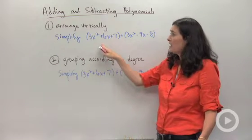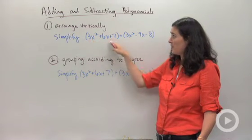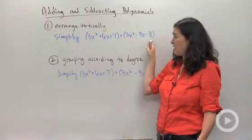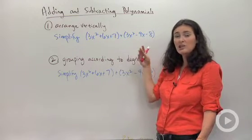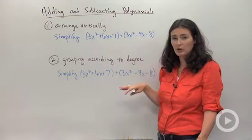Let's do the vertically one first. You're asked to simplify this polynomial plus that polynomial. Notice these are actually two trinomials. Trinomials because they've got three terms.